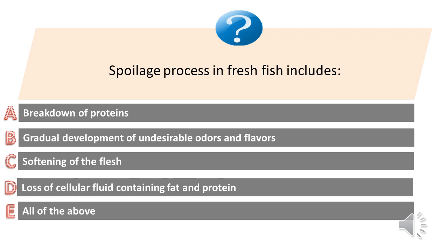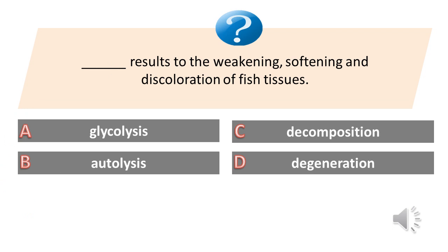Spoilage process in fresh fish includes: A. Breakdown of proteins. B. Gradual development of undesirable odors and flavors. C. Softening of the flesh. D. Loss of cellular fluid containing fat and protein. E. All of the above. Answer is E. All of the above.